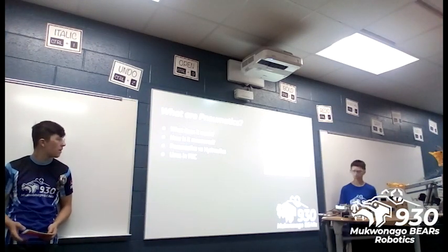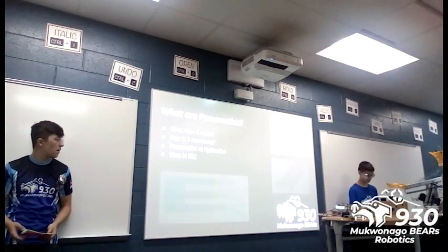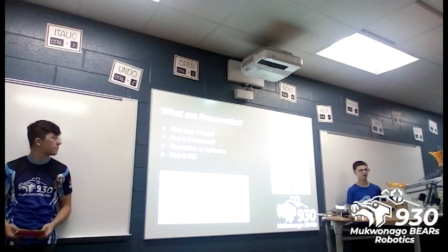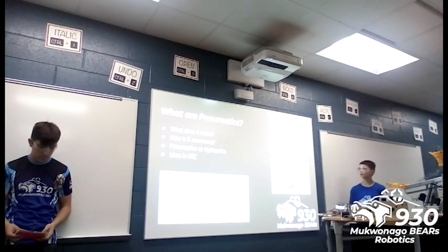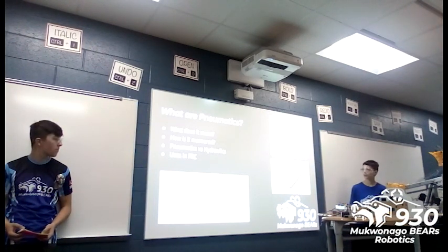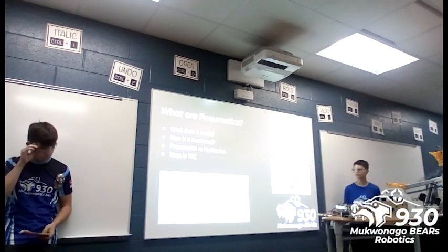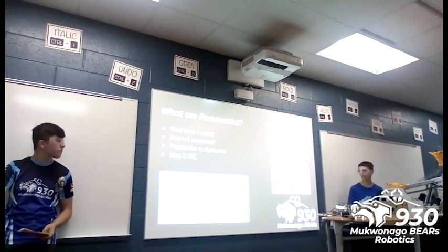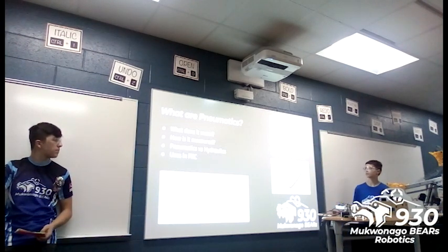How is it measured? Pneumatics are measured with two main values: flow and pressure. Flow is the total volume of gas per amount of time — it tells you the speed of your gas. The main way you can change it is basically the size of whatever orifice you're going through. It's measured mostly in feet cubed per minute or gallons per minute. Pressure is the total force that the gas exerts, measured in pounds per square inch, and it's determined by how long you run your compressor or what value your regulator is set to.